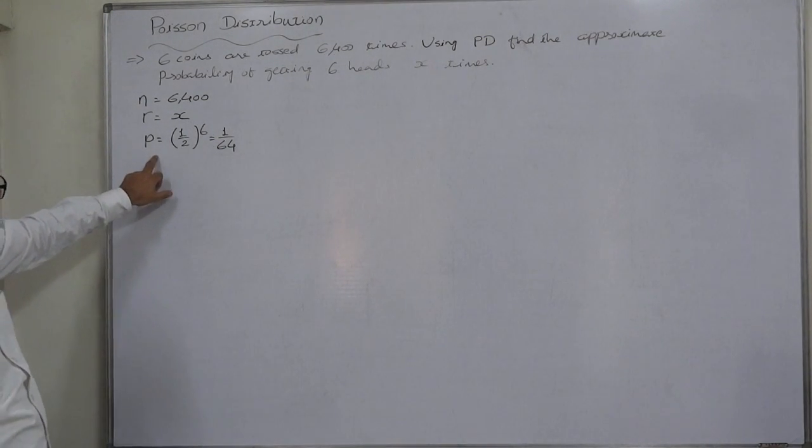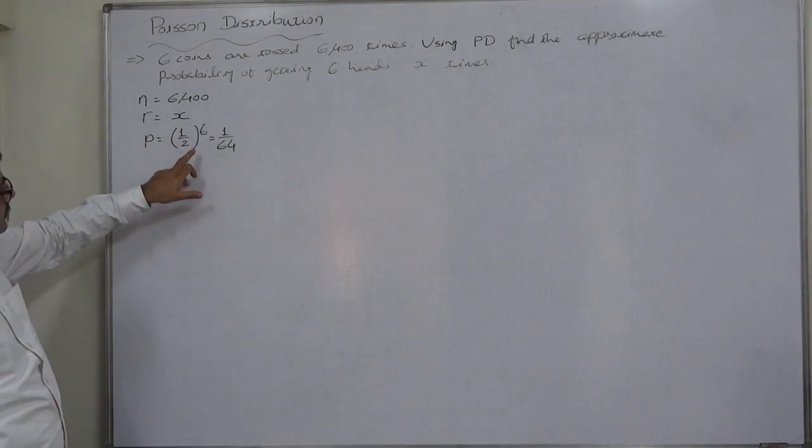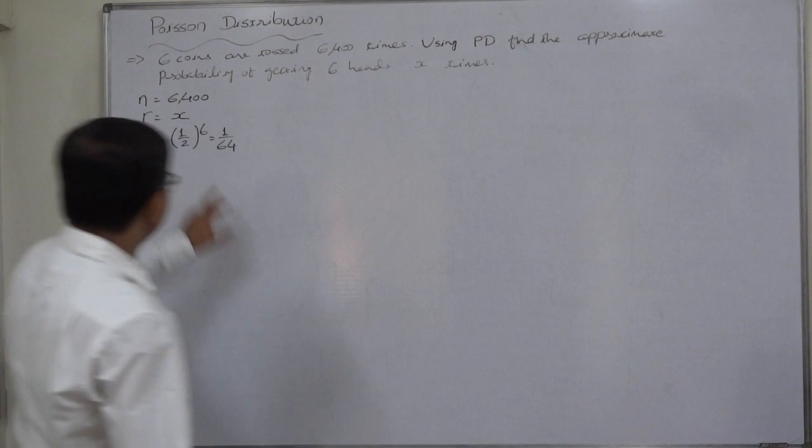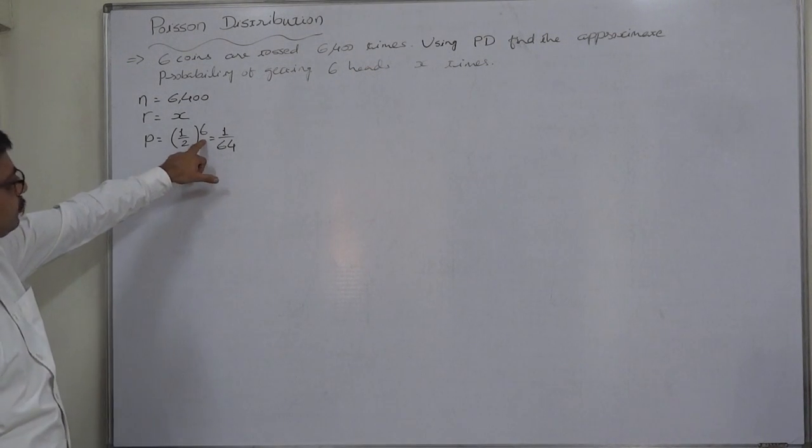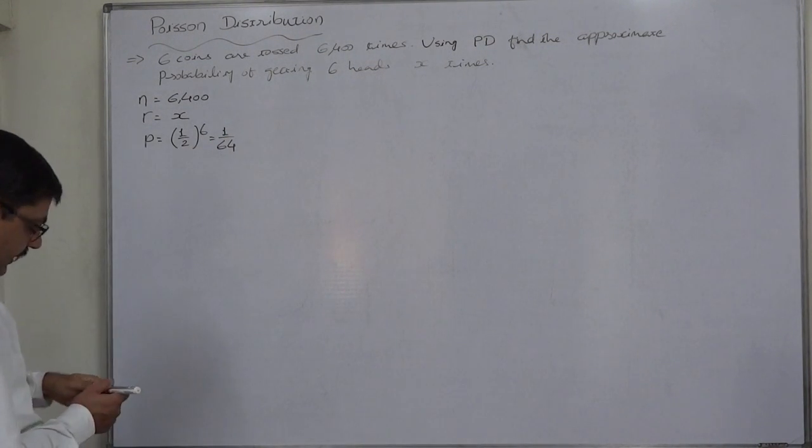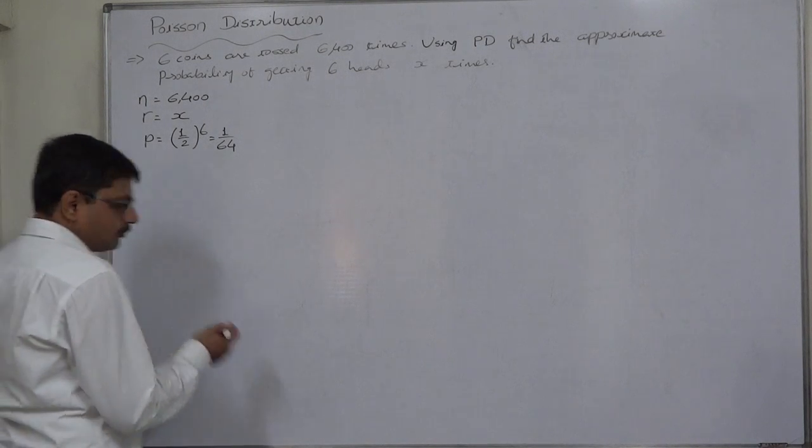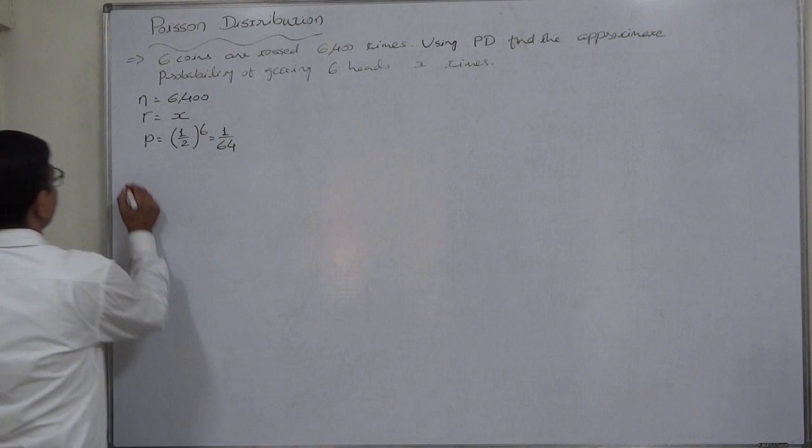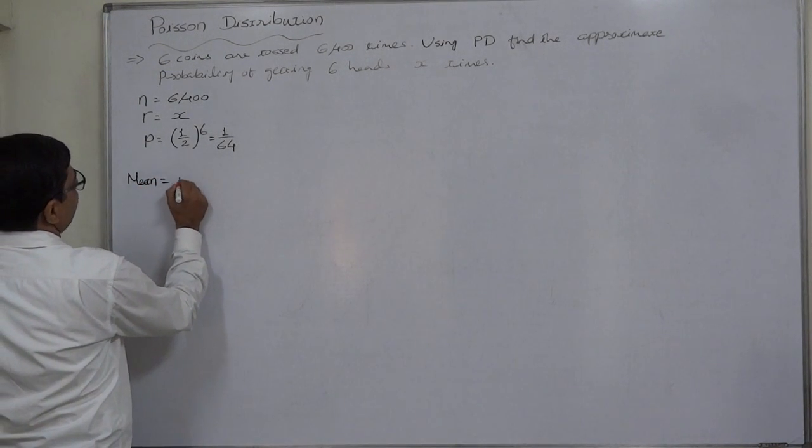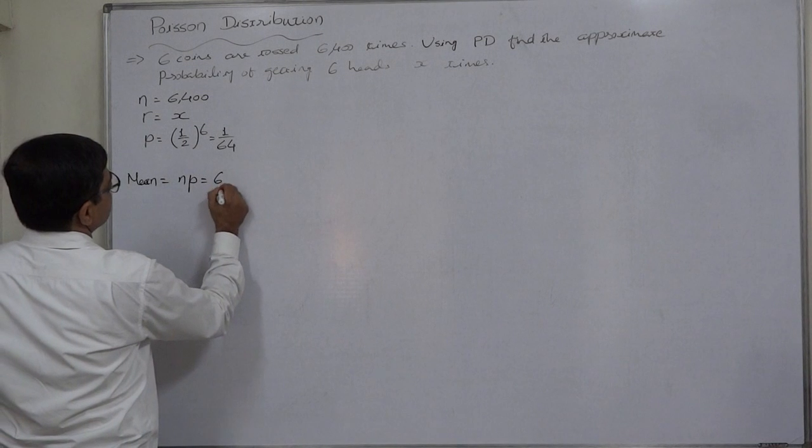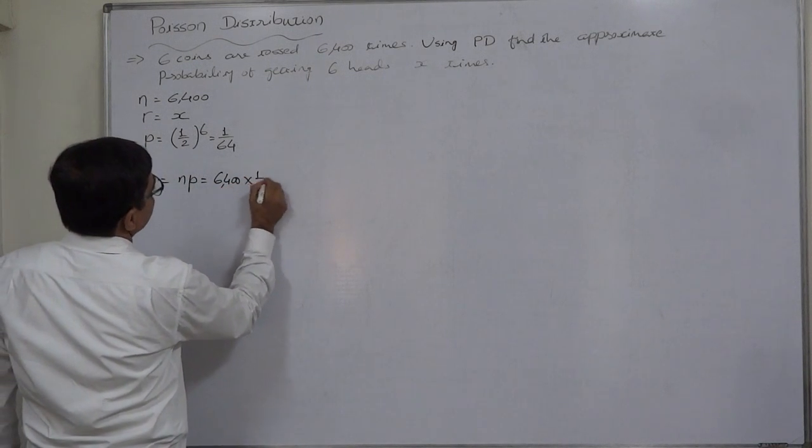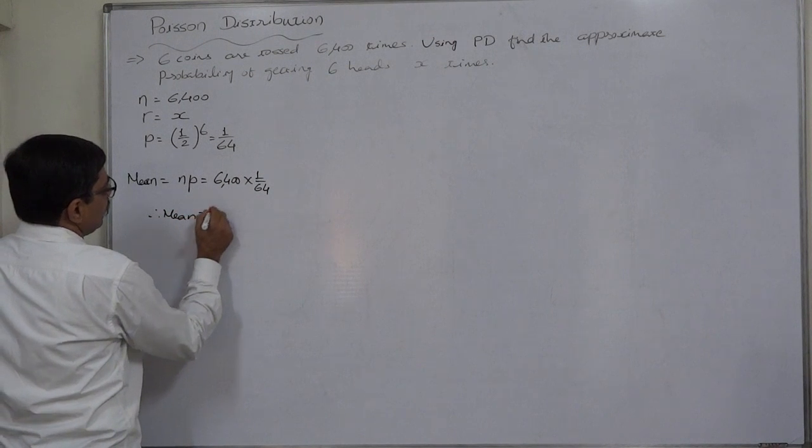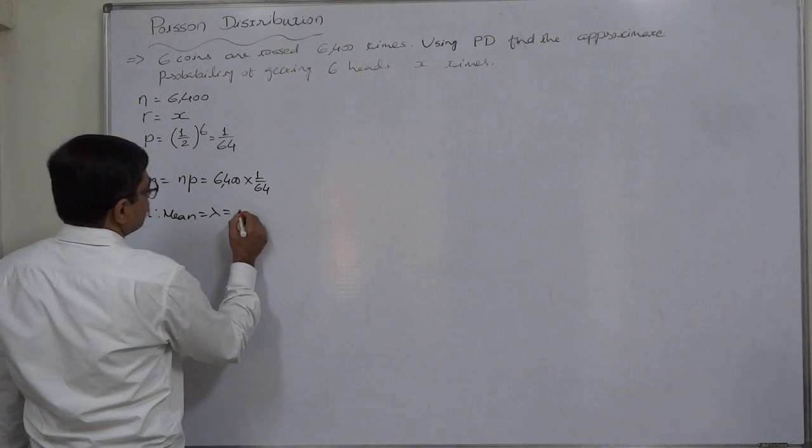Probability of getting head on all the 6 coins is 1 by 2 raise to 6, that is 1 by 64. Now to use Poisson distribution we need mean, that is np, that is 6400 into 1 by 64. So mean or lambda or mu or m comes to 100.